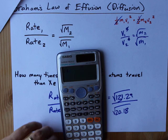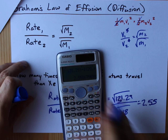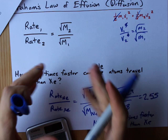Now I can just do this on the calculator. I can type the square roots with it as well. That's the square root of 131.29 divided by the square root of 20.18. The answer I get is 2.55, which means that Ne is 2.55 times faster than Xe.